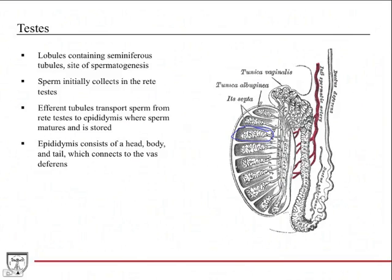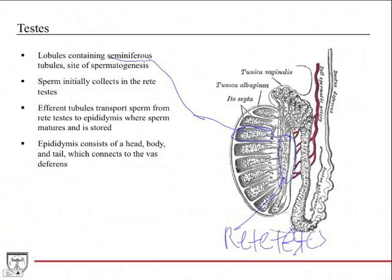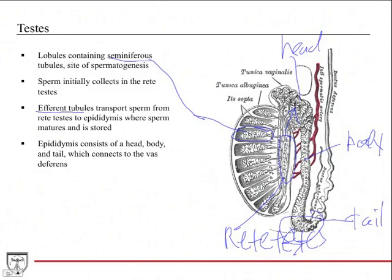Spermatogenesis occurs in the seminiferous tubules within these lobules. As sperm is created, it has to be carried out of the testicle for eventual release during ejaculation. It initially collects in the rete testis, then travels down the efferent ductules, which transfer sperm from the rete testis to the epididymis. The epididymis has three parts: the head, the body, and the tail. Sperm travels through all three, and the tail is continuous with the vas deferens, which carries it into the ejaculatory ducts and eventually into the urethra.